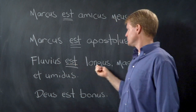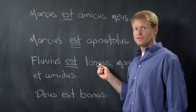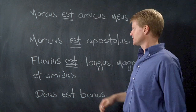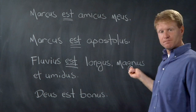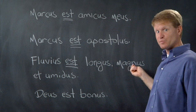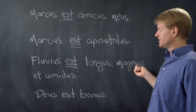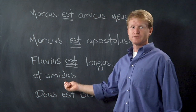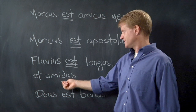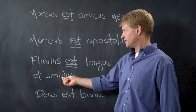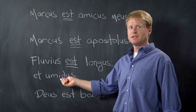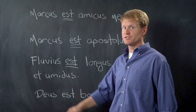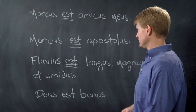Fluvius est — you can figure this one out. Fluvius est longus: the river is long. It's also magnus — it's big. And, this is good for rivers, it's humidus — it's wet. That's where we get the English word 'humid.' Where I live in Tennessee, it's humid, especially in August.